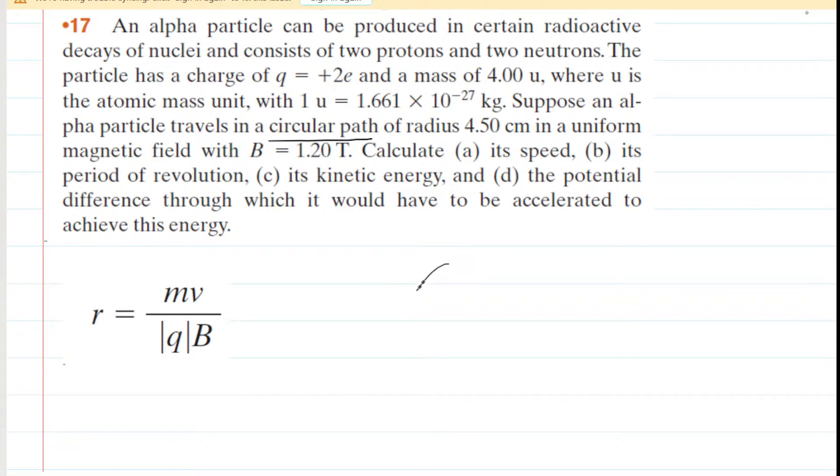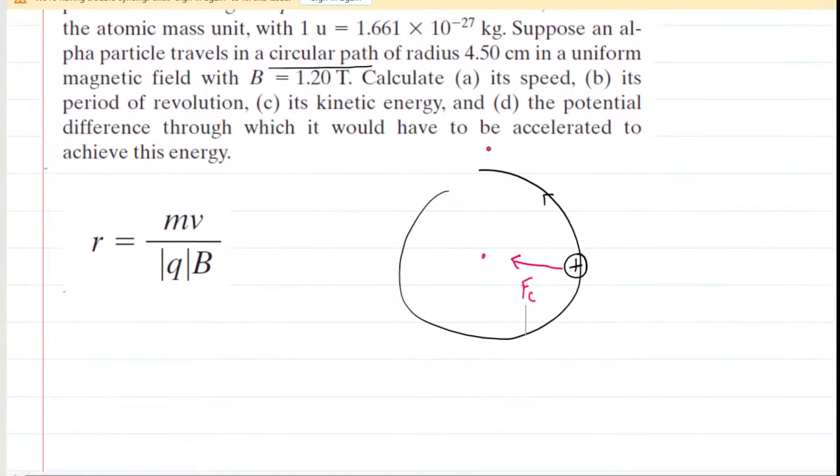If you have a charged particle that's moving around in a circular path, and in this case it's a positively charged particle, in order for it to continue moving around in a circular path, there needs to be a force that keeps it on that circular path. We call that force a centripetal force, and we know that the centripetal force points towards the center of the circular path. We can label that force F sub C.